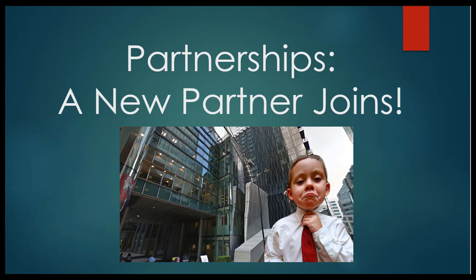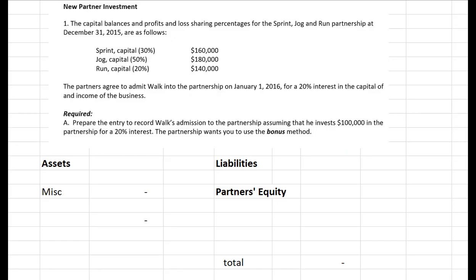Here's a problem that will give us some facts to work with. The capital balances and profit and loss sharing percentages of the Sprint, Jog, and Run partnership are as follows. We've got an existing partnership with three partners who do not share profits and losses equally, and each partner has his or her own capital balance. It's an exciting time at the partnership — they have agreed to admit Walk into the partnership.